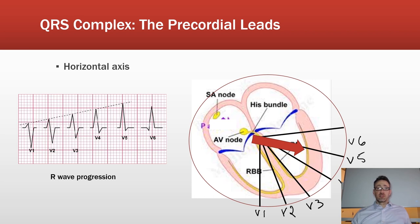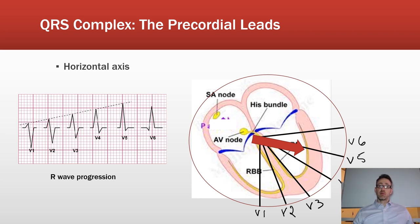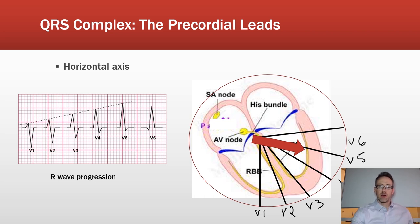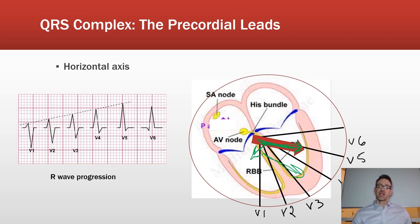Now looking at the QRS from the precordial or chest lead perspective — V1 through V6 — these leads run across the chest from the right side of the sternum to the axillary region, giving us an anterior-to-posterior horizontal view. The same three-phase ventricular depolarization pattern applies and can be depicted across these leads.